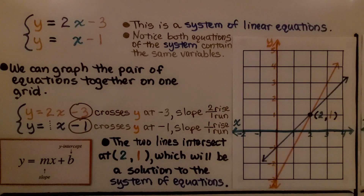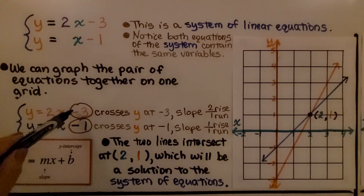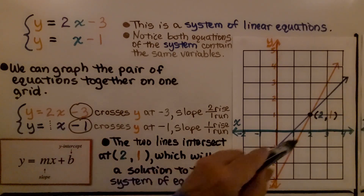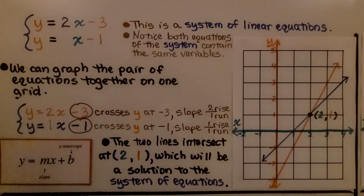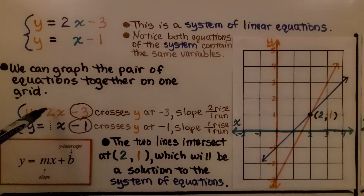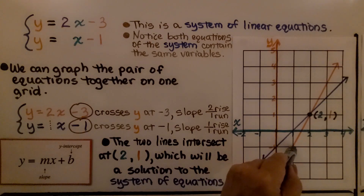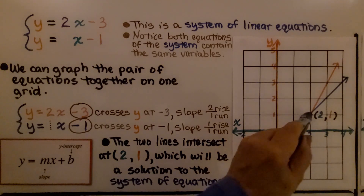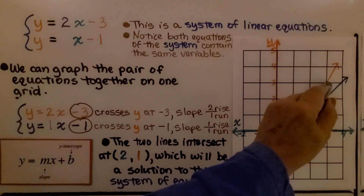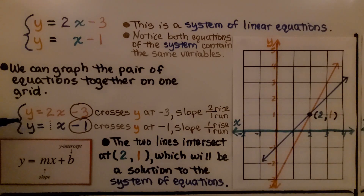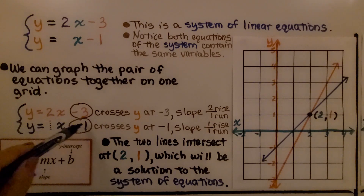We can graph the pair of equations together on one grid. Looking at the first equation, we know this negative 3 means the red line crosses the y-axis at negative 3. We also know the slope m is 2, written as 2 over 1 for rise over run. From negative 3, we go up 2 and over 1 to plot additional points along the line.